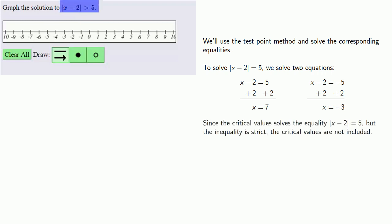Since the critical values solved the equality |x - 2| = 5, but the inequality is strict, the critical values are not included. Our solution has critical values 7 and -3, which are not included.